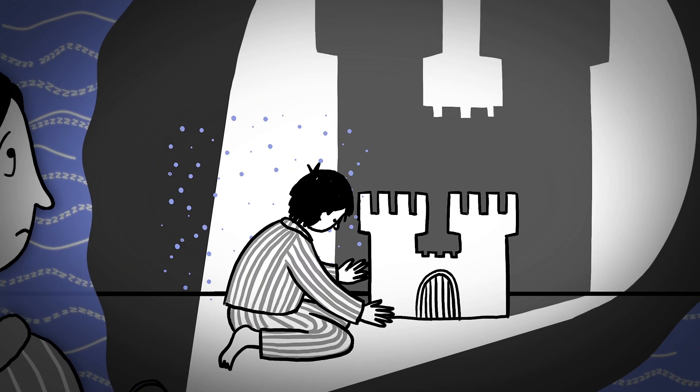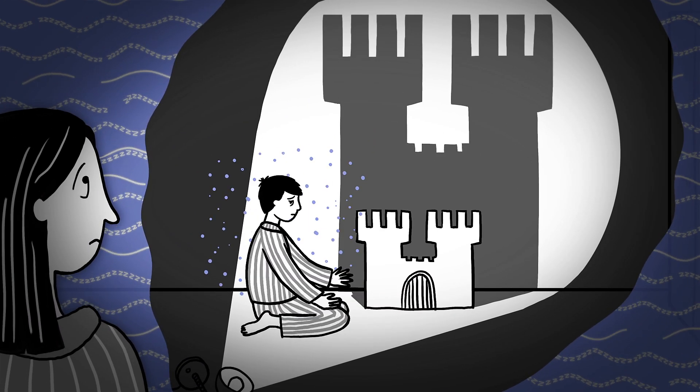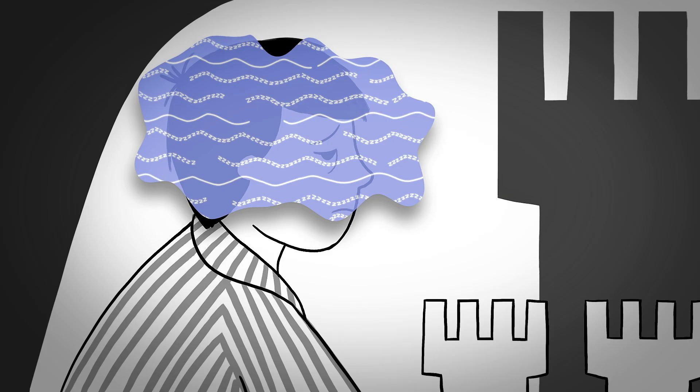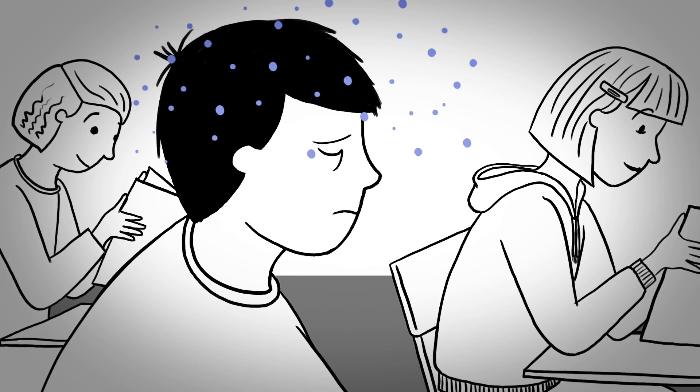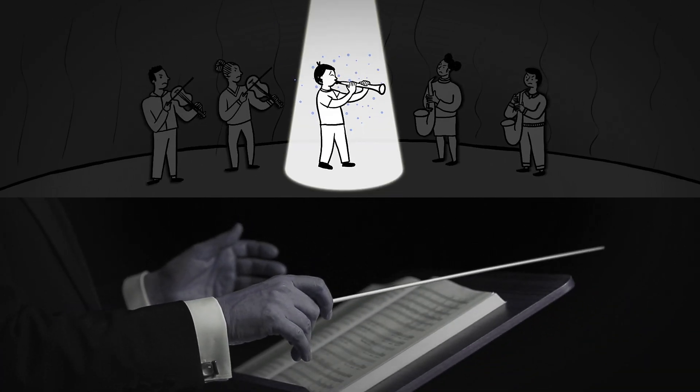For many people with autism, as for this boy, a good night's sleep is an elusive thing. As much as 86% of children on the spectrum experience disrupted sleep, which can leave them feeling out of sync with the rest of the world.